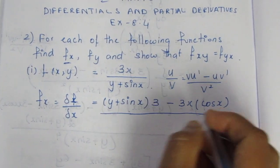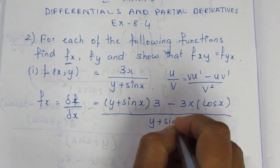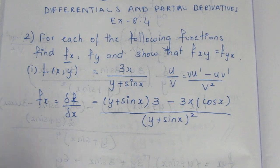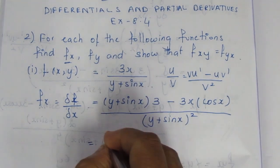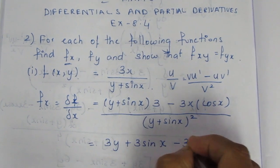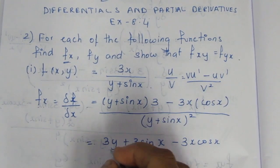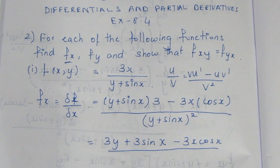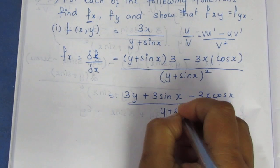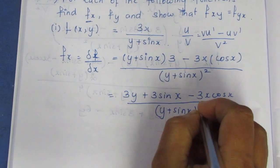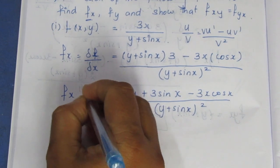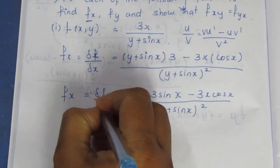x is the variable. Using the quotient rule, denominator squared is (y plus sin x) whole square. So f of x, which is nothing but dou f by dou x, equals 3y plus 3 sin x minus 3x cos x, all divided by (y plus sin x) whole square.